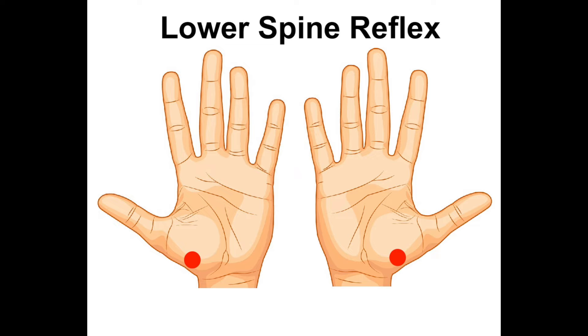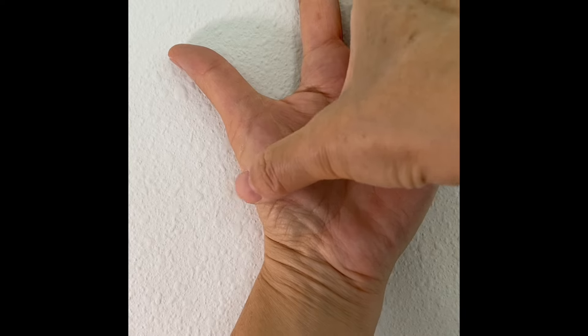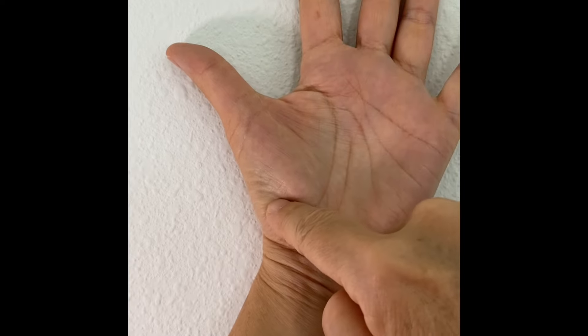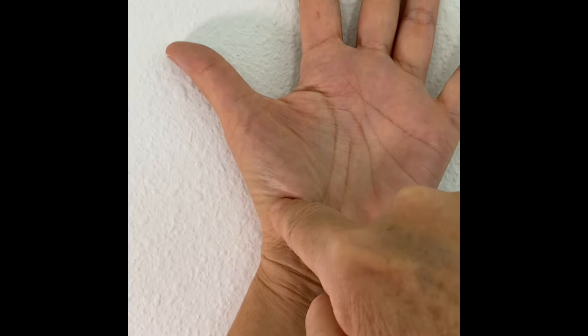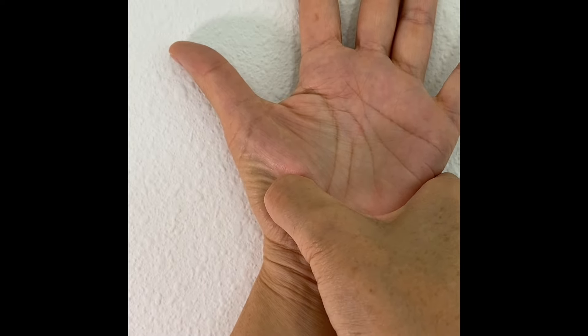The last one is lower spine reflex. It's located two thumb widths from the line between the thumb and palm. It's right above the wrist joint. Press it with a hooked thumb for 7 seconds.